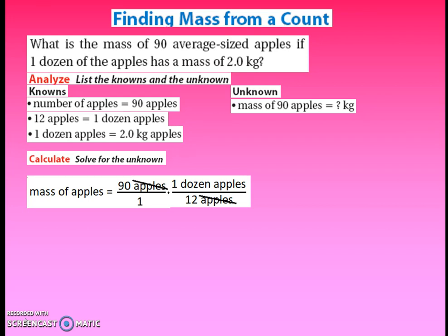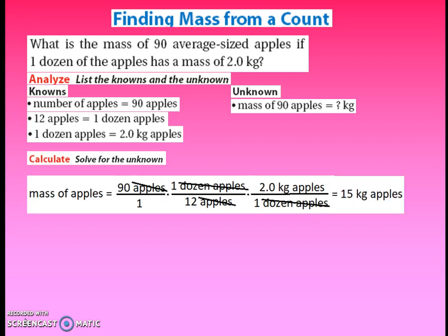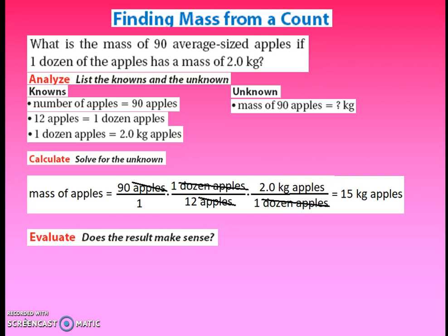Dozens of apples doesn't match kilograms yet, so we're not done. Looking at our knowns, for every one dozen apples, there are two kilograms of apples. Putting dozens in the denominator, they reduce out, leaving us with kilograms of apples. Those kilograms match the units we're trying to find, so we can solve and find that there are 15 kilograms in 90 average-sized apples. To evaluate the answer: roughly, 90 divided by 10 is 9 groups, times 2 kilograms is about 18 — so 15 is in the ballpark, meaning our answer is likely correct.